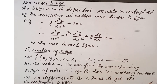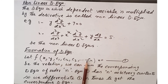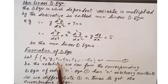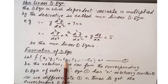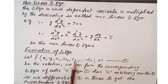The equation has n arbitrary constants, so we differentiate n times to obtain the corresponding differential equation. If it has one arbitrary constant, we differentiate once. If it has two arbitrary constants, we differentiate two times. If it has three arbitrary constants, we differentiate three times. After eliminating the arbitrary constants, we get the required differential equation.